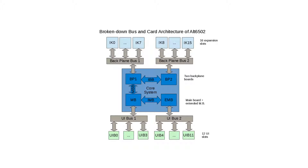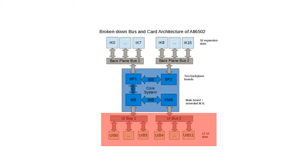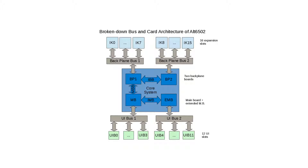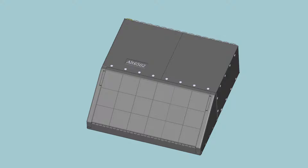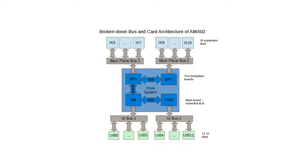Breaking down the structure in more detail, the aim is to have 16 expansion boards organized into two different backplane buses, and 12 user interface boards organized into different user interface buses with 4 and 8 slots respectively. The core structure is broken down into four boards: the main board, the extended main board, and backplane boards 1 and 2. The reason for this division of the buses and core boards is mainly practical, and will be evident when we discuss the casing and PCB manufacturing, as there are limitations on the sizes of PCBs and 3D printed items.